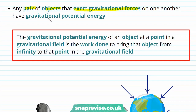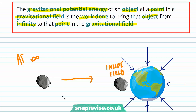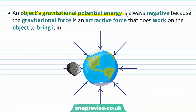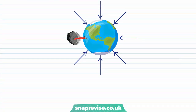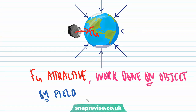Any pair of objects that exert gravitational forces on one another have gravitational potential energy. The gravitational potential energy of an object at a point in a gravitational field is the work done to bring that object from infinity to that point in the field. An object's gravitational potential energy is always negative, because the gravitational force is an attractive force that does work on the object to bring it in, and therefore the gravitational potential energy is negative.